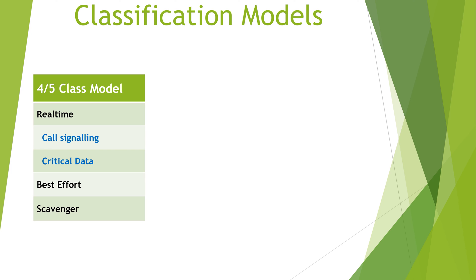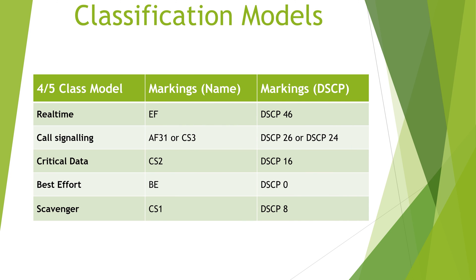So what markings might we apply to these categories? There are only five categories here, so it's really quite simple. Real-time traffic is marked with expedited forwarding (EF), indicating that it needs quick and uninterrupted handling. Call signalling is also pretty important, as it sets up phone calls, so it would get a marking of either AF31 or CS3. Our other critical data would be lower than this, so we may use a CS2 marking. Best effort traffic would have the BE marking — this sets the DSCP bits to all zeros, making it effectively the default class with no marking. The scavenger class gets the CS1 marking. Remember that these are all just examples, and doing it this way makes it easier to add more classes in between later on.